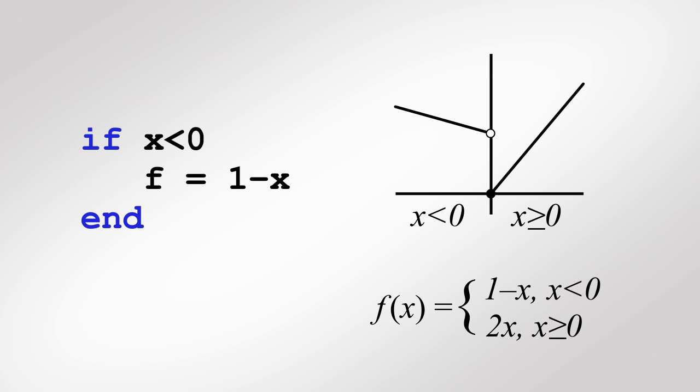Here, the calculation f equals 1 minus x occurs only when x is less than 0. Note that in an IF statement, the condition should always evaluate to a logical scalar, either true or false. Also, the IF keyword should always have a corresponding END keyword, which denotes the end of the statement. A single IF statement can contain one line of code or many lines of code.